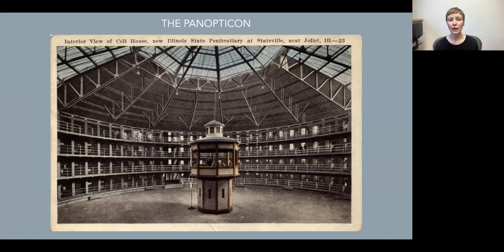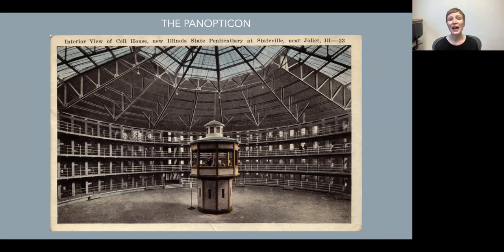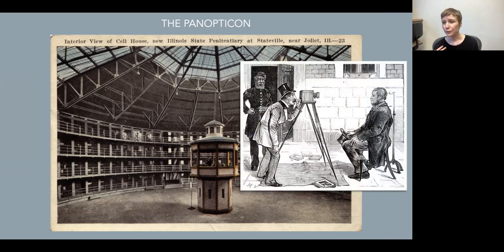The guards could see the prisoners without being seen in return, and this privileged perspective gave them power. This dynamic of one-way looking — the ability to watch without being seen in return — becomes the dynamic we associate with and theorize about modern surveillance. Photography intersects with surveillance in really interesting ways, because like the panopticon, the camera is also a device of one-way looking: when we stand behind our cameras, we're the ones looking out and constructing our view of the world.